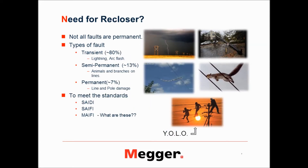Now we are going to move to why we need reclosers in your system. When we talk about faults, not all faults are damaging or permanent. Some are transient faults. As you can see in this slide, almost 80% of the faults that occur in our system are transient faults, which are only there for a couple of cycles or a couple of seconds and then disappear — like lightning or arc flash or something like that.